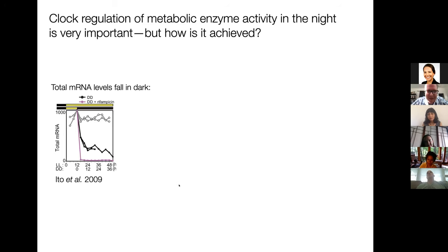From all of that information, I think what you take away is that it must be that the clock regulation of metabolic enzyme activity in the dark is very important. If you don't have the right metabolic pathway as active or amino acid biosynthesis is too active, the cells may not be able to survive the dark. But how is that actually achieved? How is the activity of metabolic enzymes controlled?